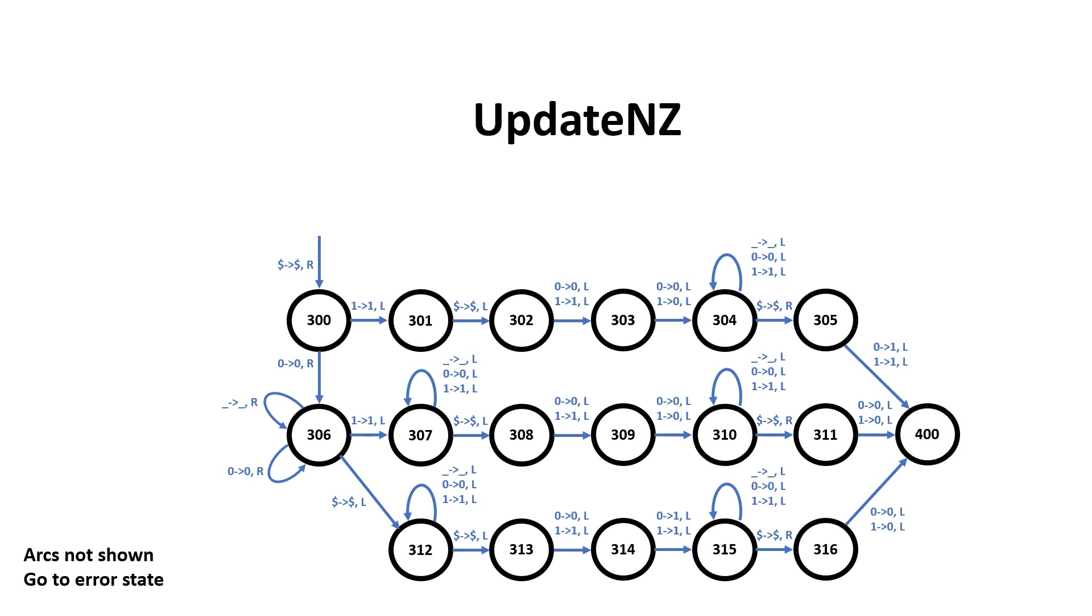I'm going to call this the updateNZ machine. This upper pathway is for when the value in the A register is negative. The middle pathway is for when the value in the A register is neither negative nor zero. Finally, we follow the bottom pathway if the value in the A register is zero. Now the really cool thing is, I can add this updateNZ machine to both the AND and the OR operations.